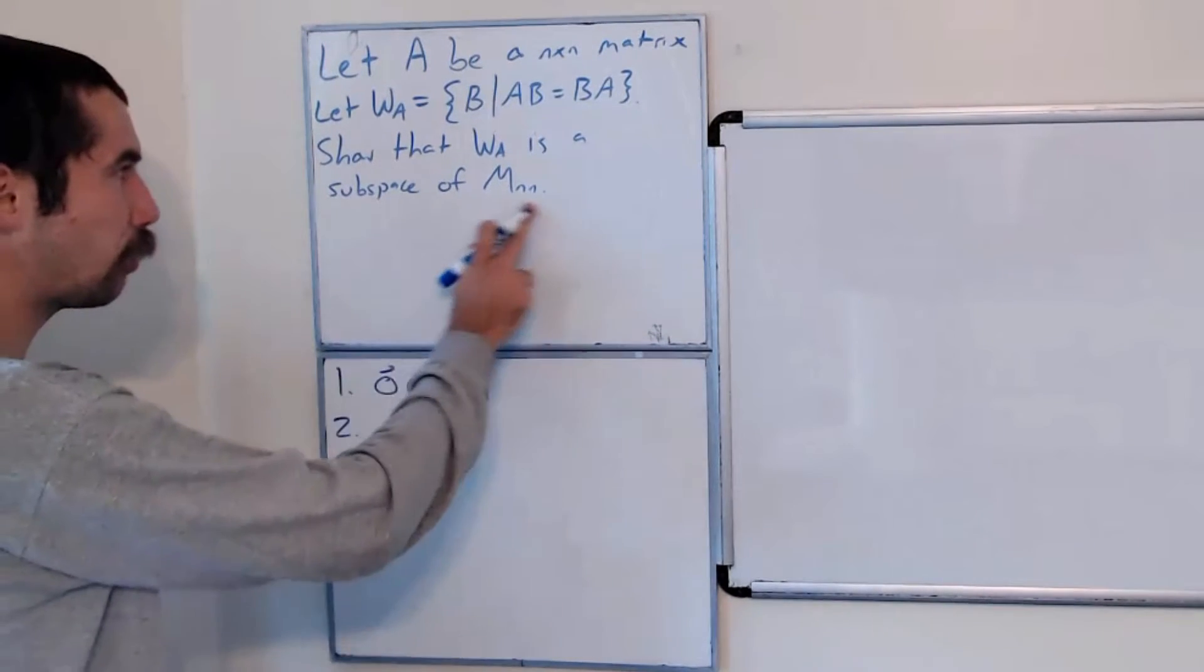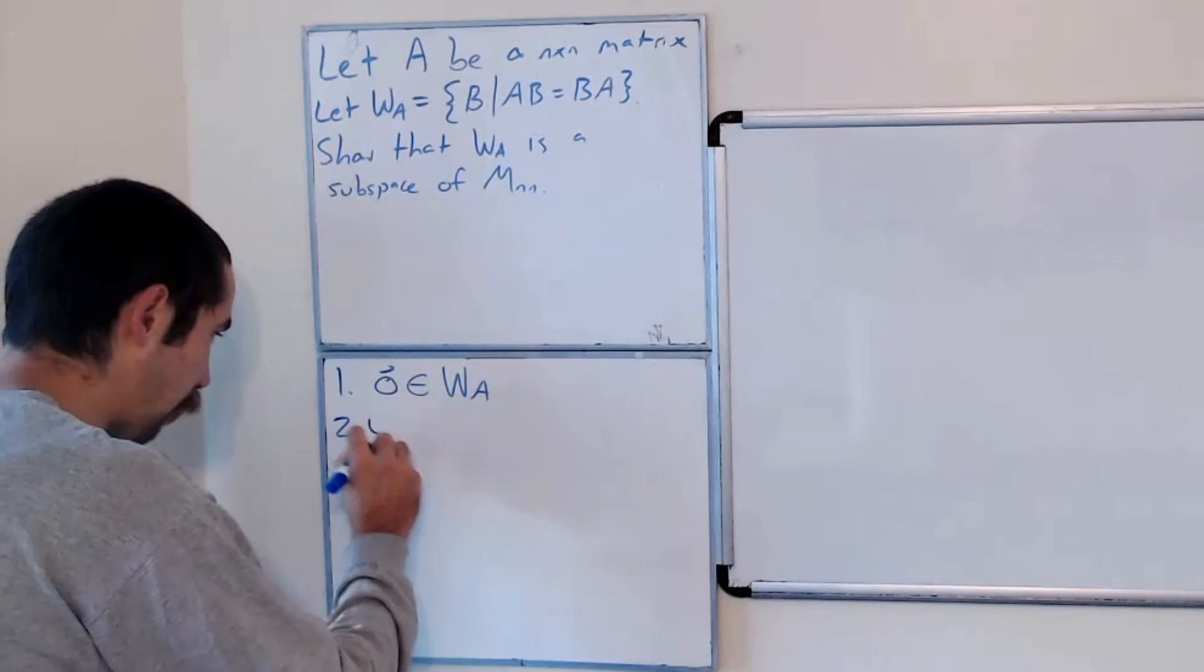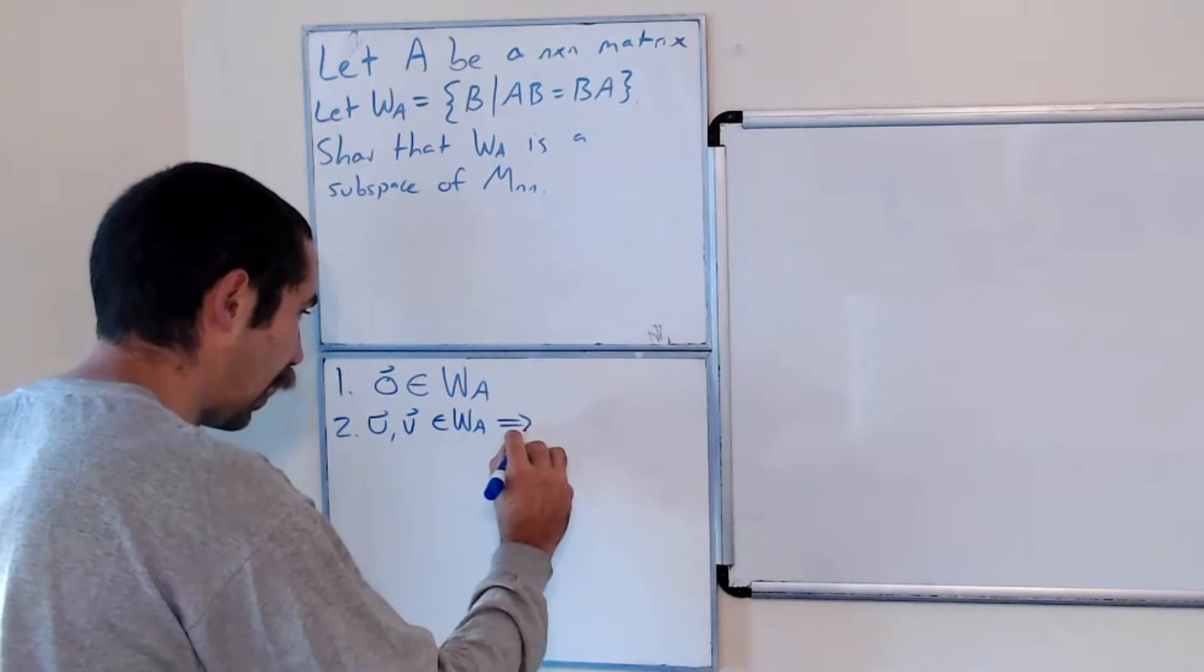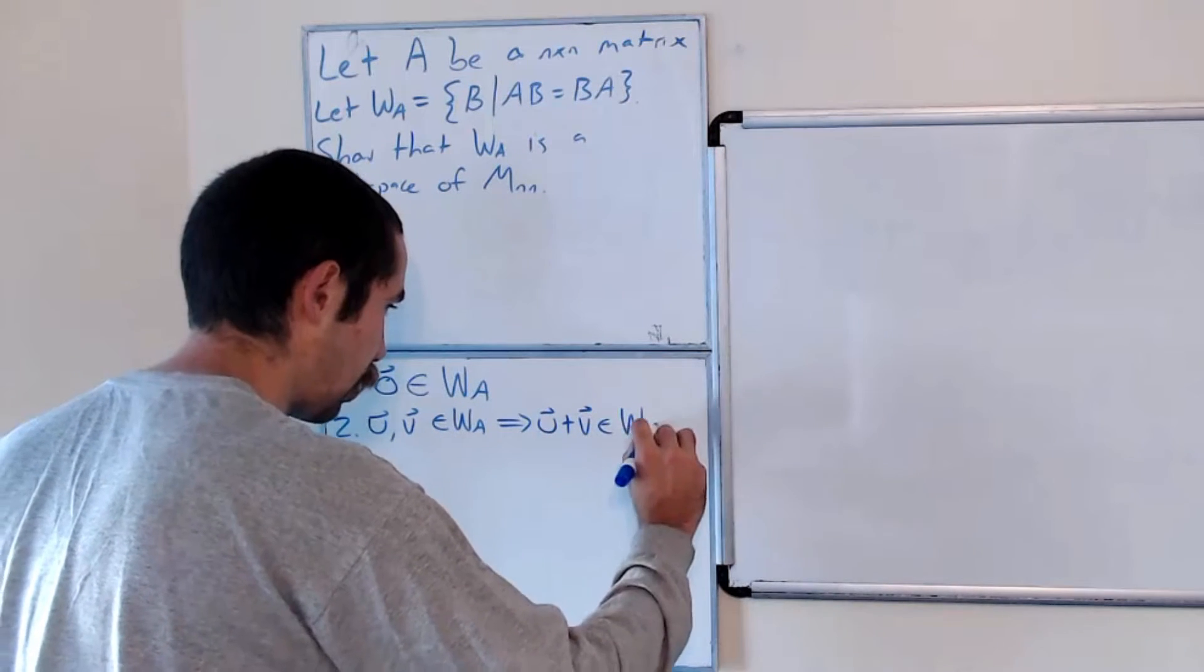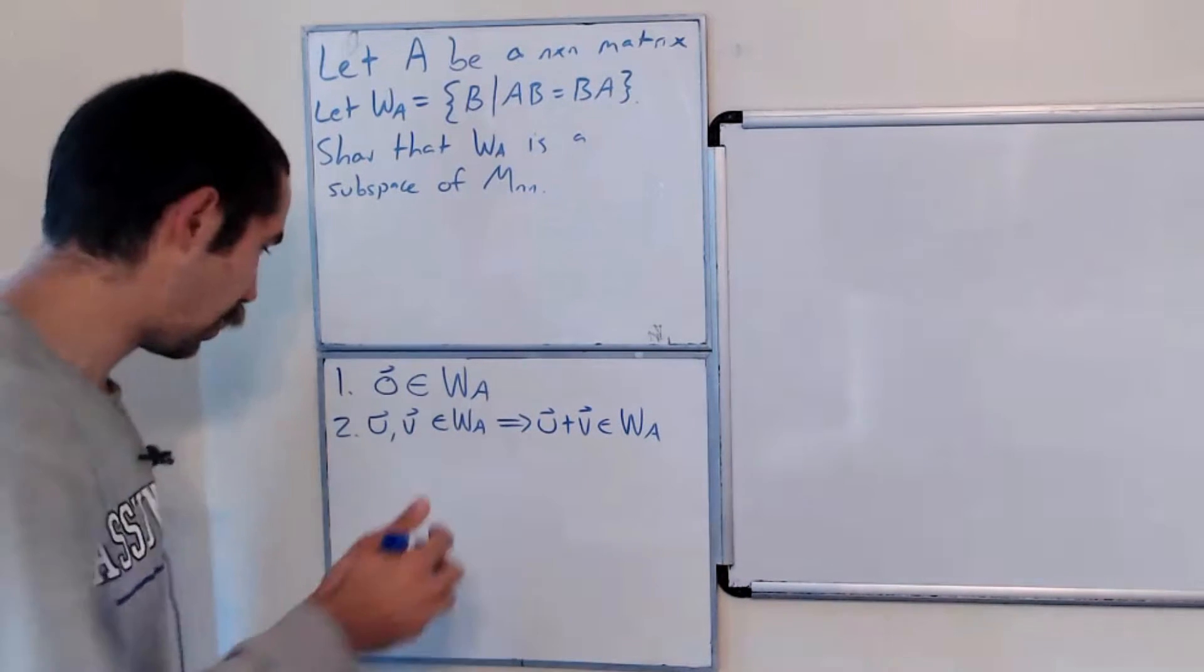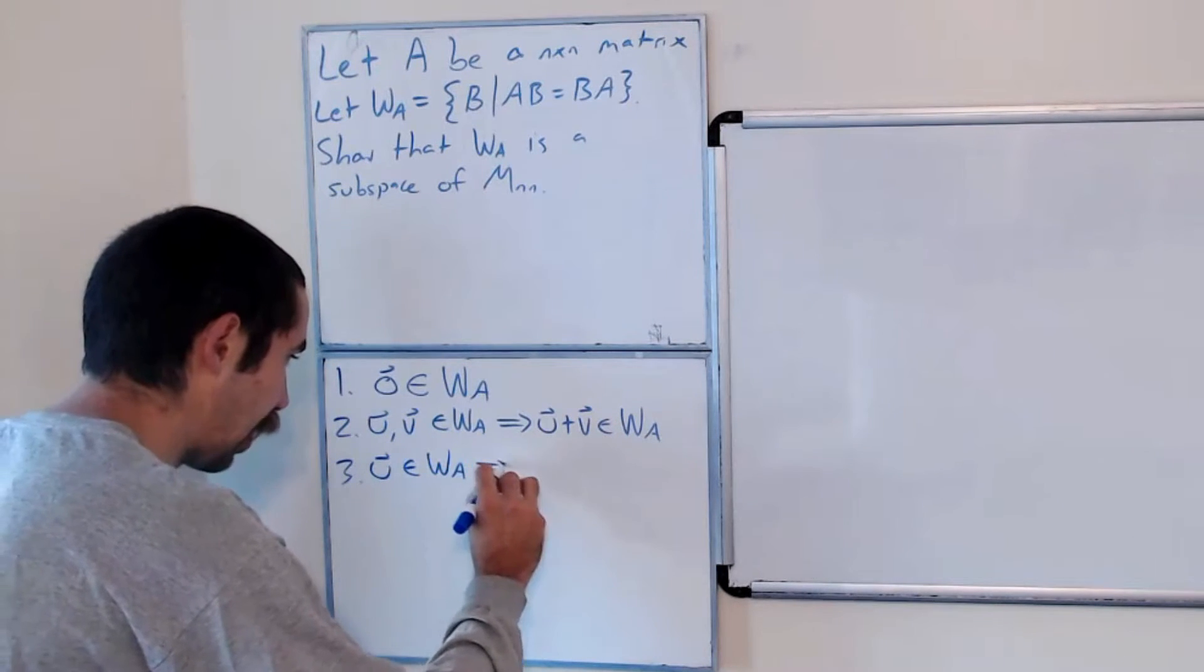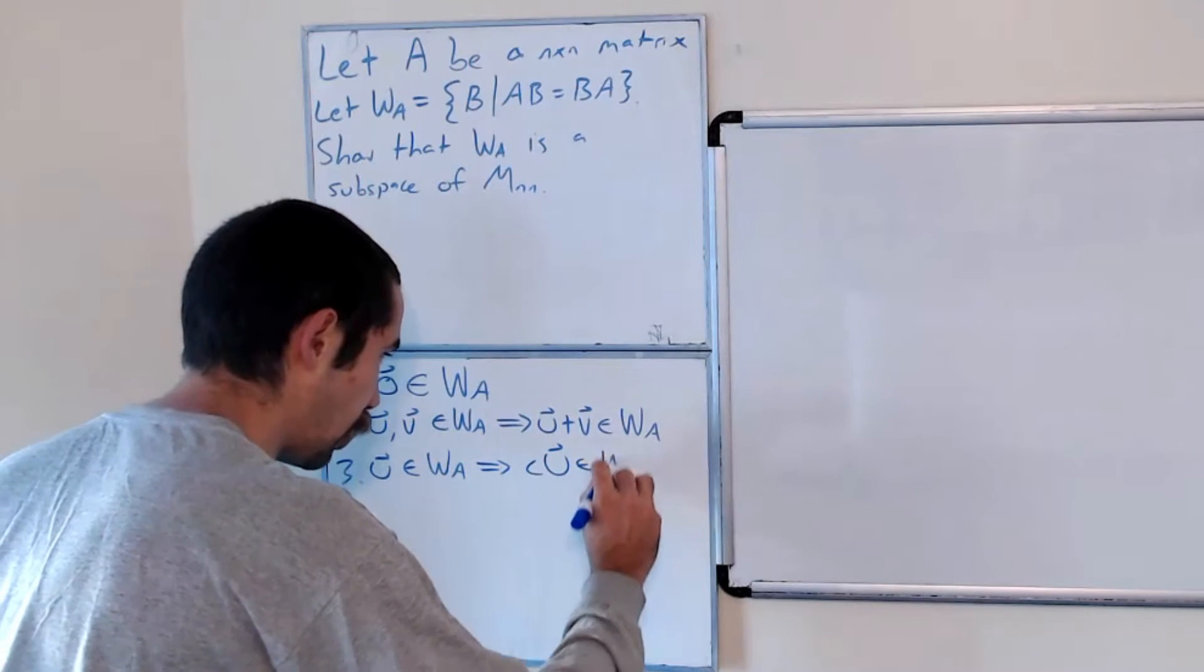Second, if we have two vectors of M_nn, so if we have two n by n matrices, so let's say we have U and V are in W sub A, we want this to imply that their sum is also in W sub A. And the last thing we need to show is that if we have an element of W sub A, then any scalar multiple is also in W sub A.